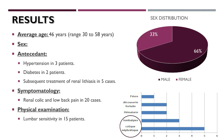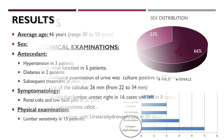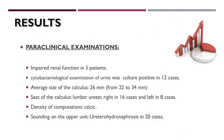The average age is 46 years old, with extremes ranging from 30 to 58 years old. The male sex was predominant. Regarding antecedents: arterial hypertension in 3 patients, diabetes in 2 patients, and prior treatment of renal lithiasis in 5 cases. The symptomatology is dominated by renal colic and low back pain. Lumbar sensitivity is found in 15 patients. Impaired renal function was noted in 5 patients, and the cytobacterial examination of urine was culture positive in 12 cases.